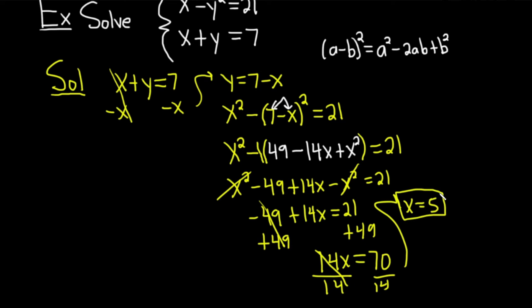To find the y-coordinate, we can take this x and plug it back in. So here we have y equals 7 minus x. So if we plug in x there, we get y equals 7 minus 5, so we get y equals 2.